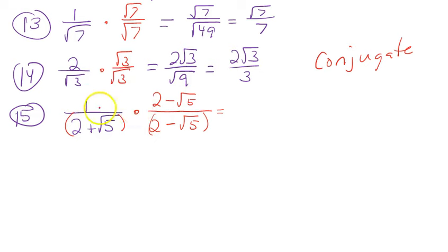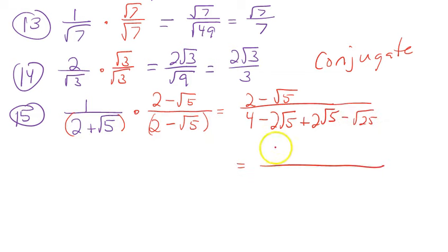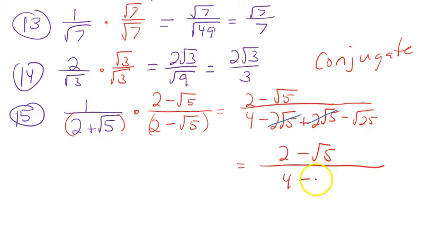On top, 1 times anything is itself, so the top is 2 minus √5. On the bottom, FOIL: 2 times 2 is 4, 2 times negative √5, positive √5 times 2, and finally negative √5 times √5 is negative √25. The middle terms cancel — negative 2√5 and positive 2√5 — leaving 4 minus √25, and √25 is 5, giving 4 minus 5 equals negative 1.